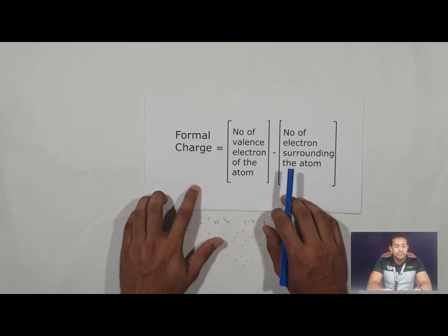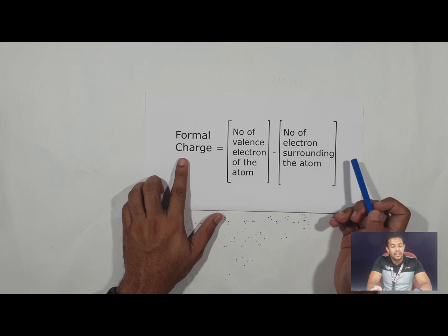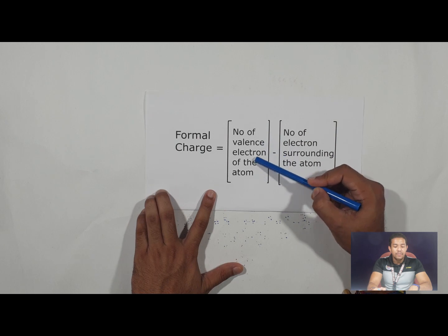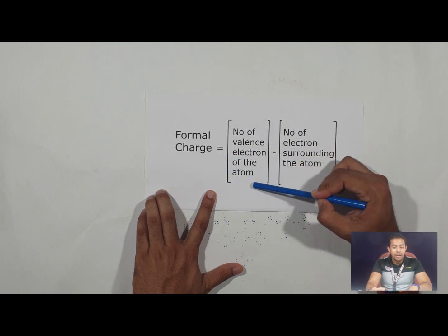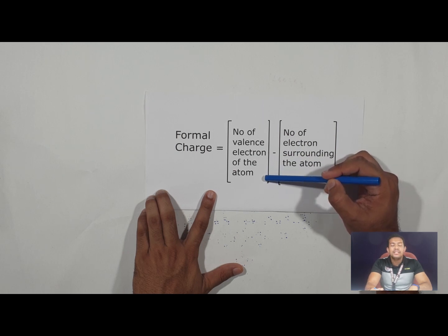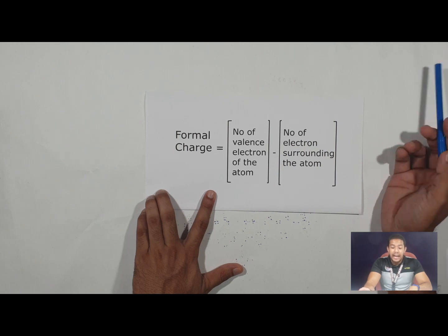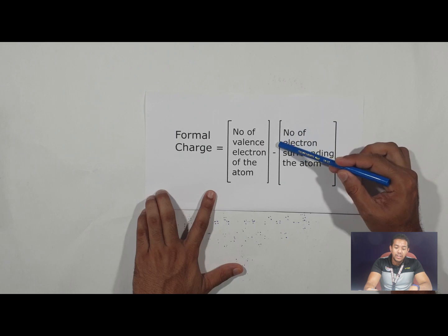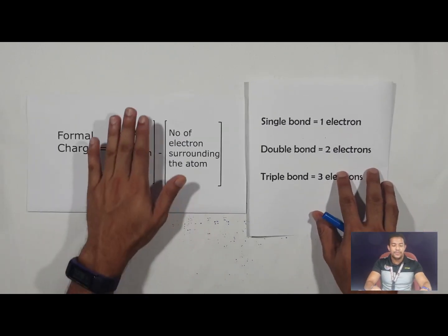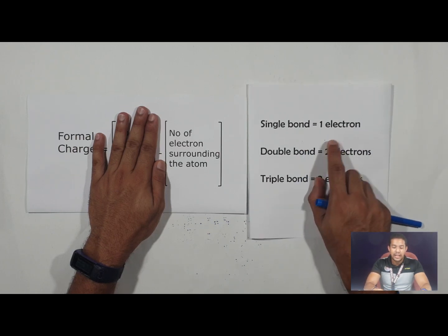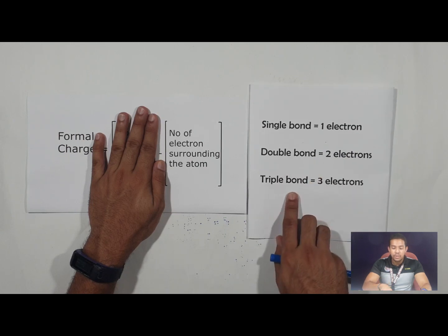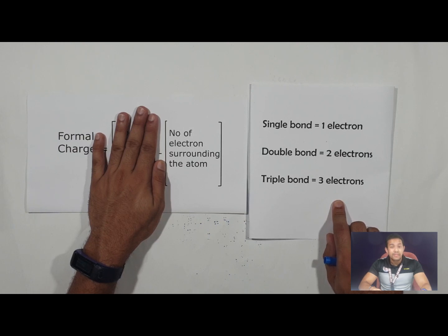Just to recall: the formula is formal charge equals the number of valence electrons of the atom minus the number of electrons surrounding the atom. You should already know the valence electrons for basic elements like nitrogen, oxygen, and fluorine. For the electrons surrounding the atom: a single bond contributes one electron, a double bond contributes two electrons, and a triple bond contributes three electrons. Let's try an example.